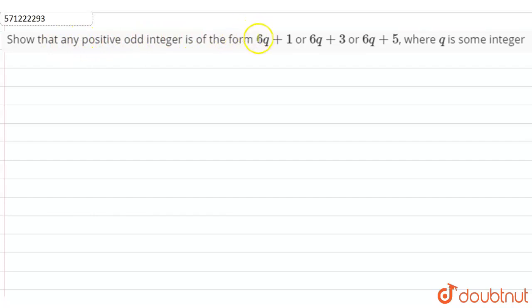that any positive odd integer is of the form 6q+1, 6q+3, or 6q+5, where q is some integer. So in these type of questions, firstly let a be any positive integer.